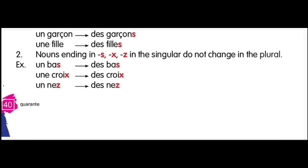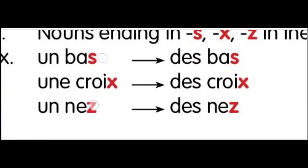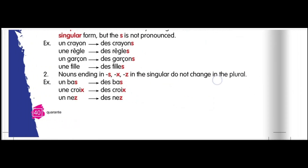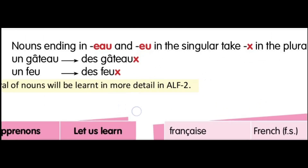The second rule: nouns ending in 's', 'x', or 'z' in singular do not change in the plural — only the article changes. For example: 'un bras' becomes 'des bras', 'une croix' becomes 'des croix', and 'un nez' becomes 'des nez'. The ending remains the same; only the article changes from 'un' or 'une' to 'des'.